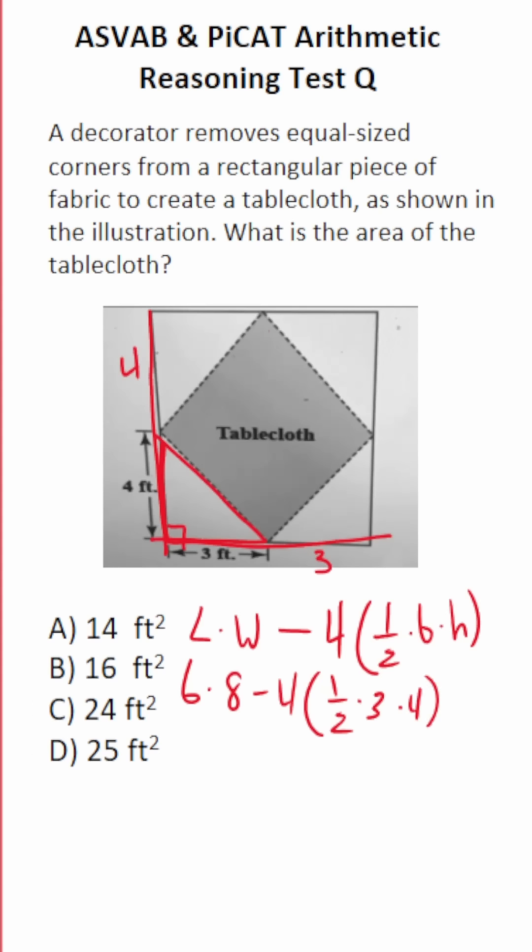This math is very simple to do. 6 times 8 is 48. Minus 4 times. 3 times 4 is 12. 1 half of 12 is 6. So this is 48 minus 4 times 6 is 24. 48 minus 24. I'll do off to the side for you. 8 minus 4 is 4. 4 minus 2 is 2.